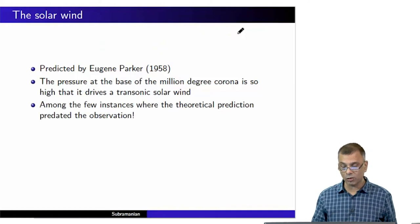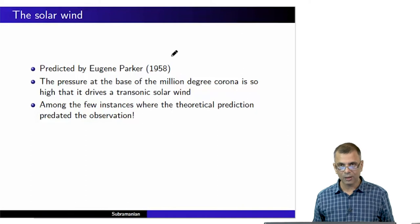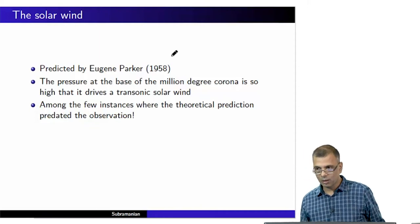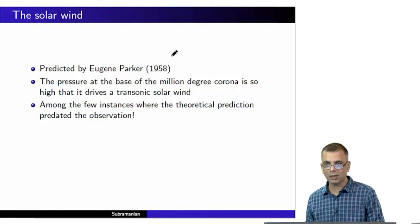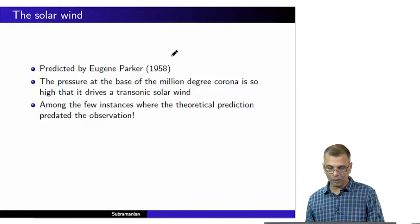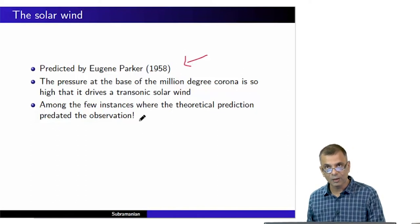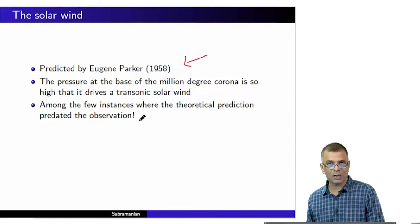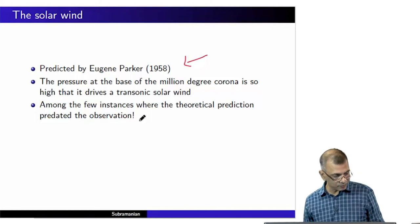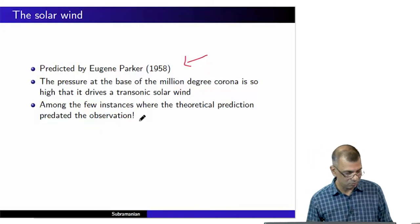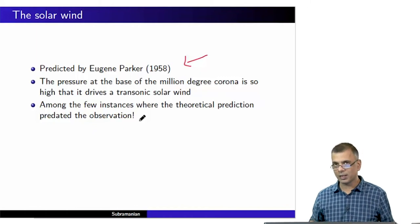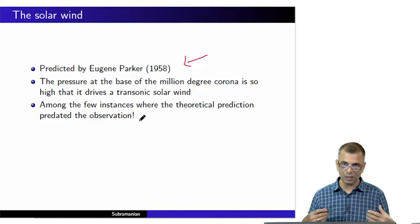The actual discovery of the solar wind happened after 1958. The observation confirmation of the solar wind was quite interesting. This was among the first few instances where the theoretical prediction predated the observation — quite a brilliant thing, this does not happen very often. Most of the time there is a puzzling observation and existing understanding does not fit in, so one has to invent a theory that fits the observation.